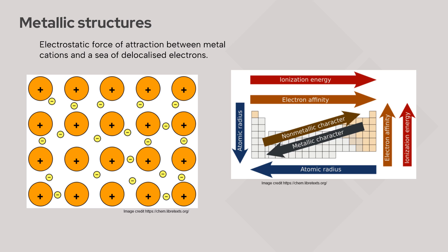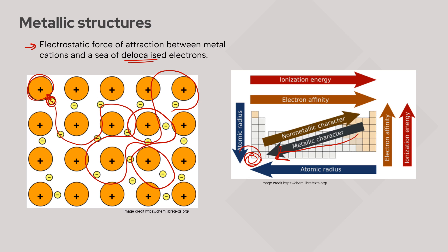Metallic structures form generally amongst metals, but sometimes also metalloids, when we have electrostatic forces of attraction between metal cations and a sea of delocalized electrons. Metals have very low electronegativity and very low electron affinity, so they are not very good at pulling on their valence electrons. Those valence electrons are released into a sea of delocalized or free electrons — rather than being held in orbitals for just one atom, they can flow freely around all of the metal cations in that metallic structure.